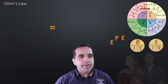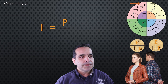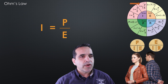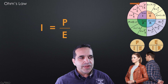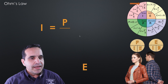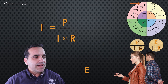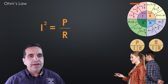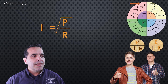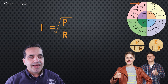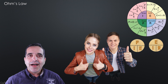Finally, the last formula. We start with amperage equals power divided by voltage. We have amperage and wattage, but we don't have resistance. From the Ohm's law wheel, E equals I times R, so we replace E with I times R. Amperage appears on both sides, so they square — giving I squared equals wattage over resistance. Square rooting both sides gives us the square root of power over resistance equals amperage. With these two small wheels — the power wheel and the Ohm's law wheel — you can find all 12 formulas on the Ohm's law wheel.